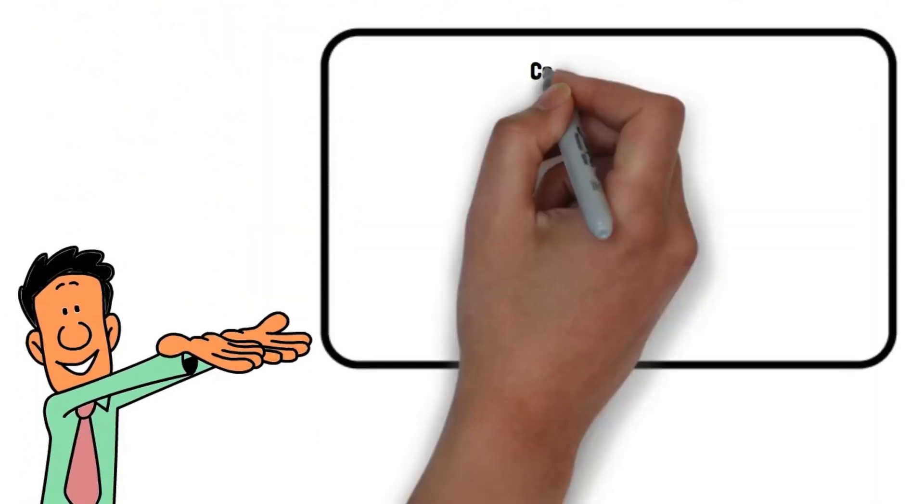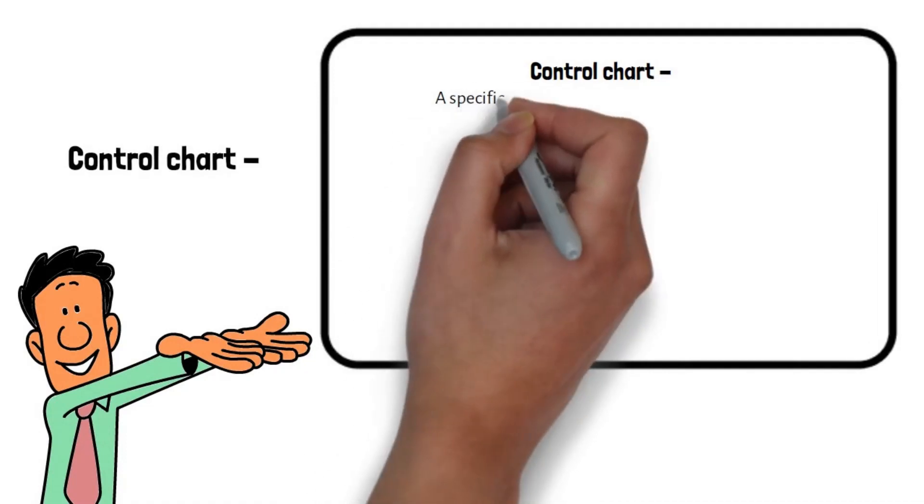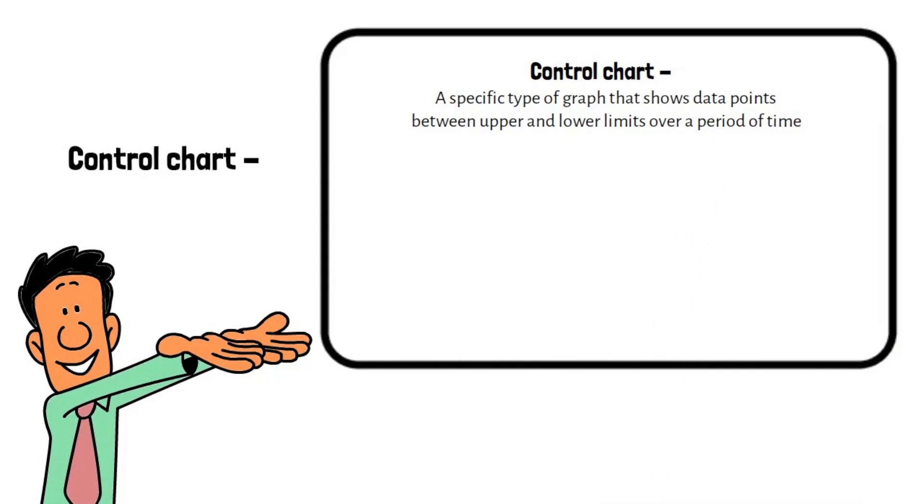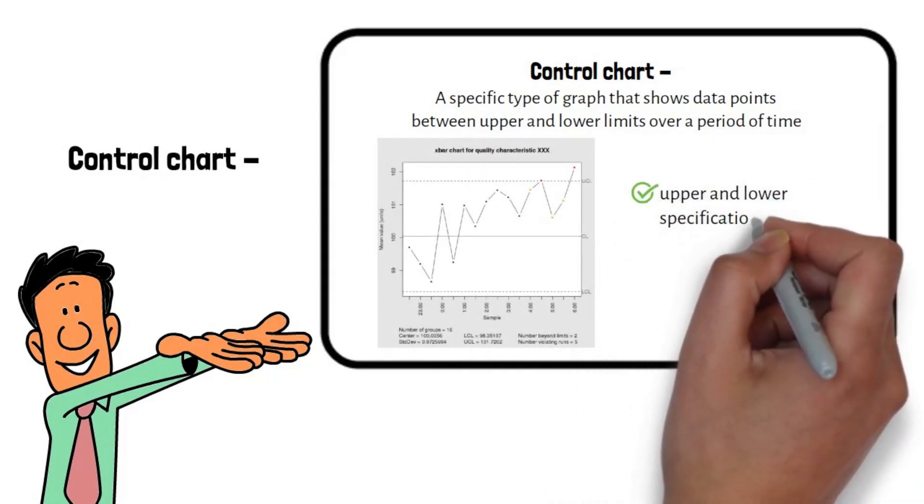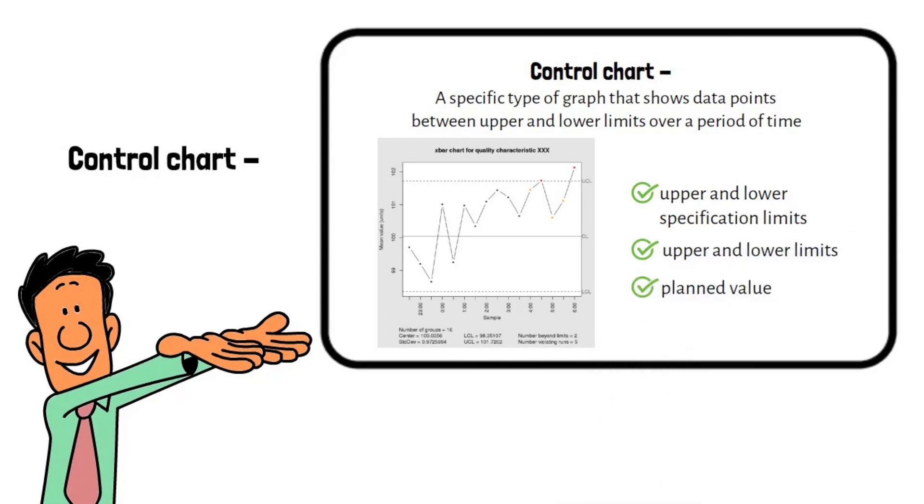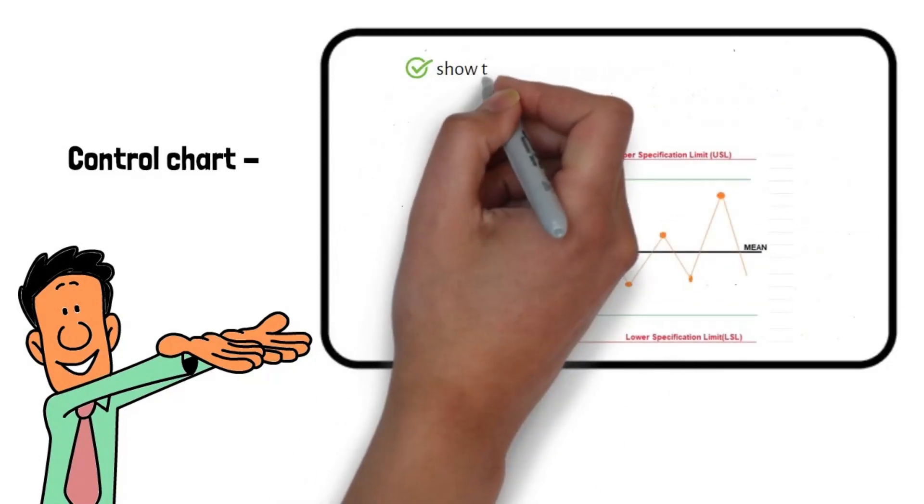What is a control chart? A control chart is a specific type of graph that shows data points between upper and lower limits over a period of time. These charts commonly have three types of lines such as upper and lower specification limits, upper and lower limits, and planned value. With the help of these lines, control charts show the process behavior over time.